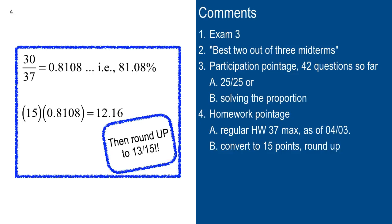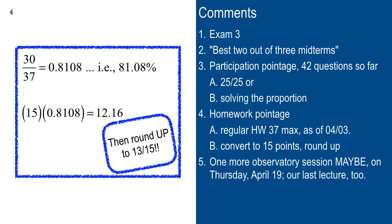The way that bonus points work is they're just out there in your bin, and they go into the numerator. Right now we have 140 points possible. You have some homework points, participation points, and exam points — those go in the numerator. You add them up and they go in the numerator, and then the denominator is always 140.